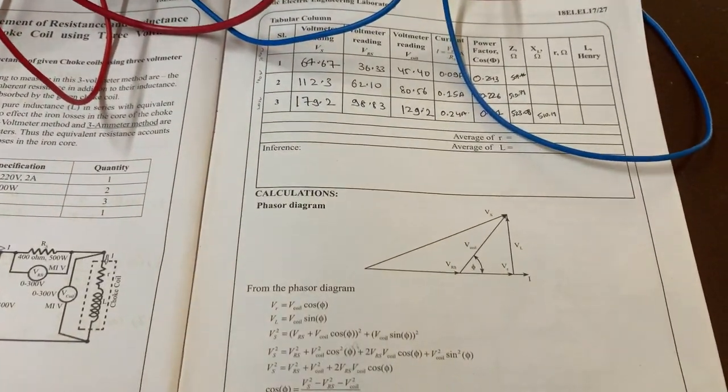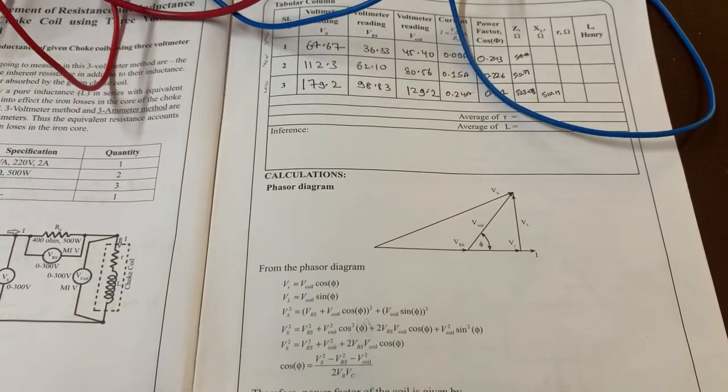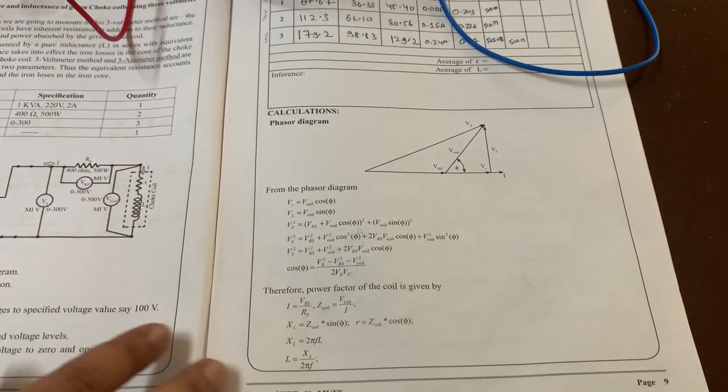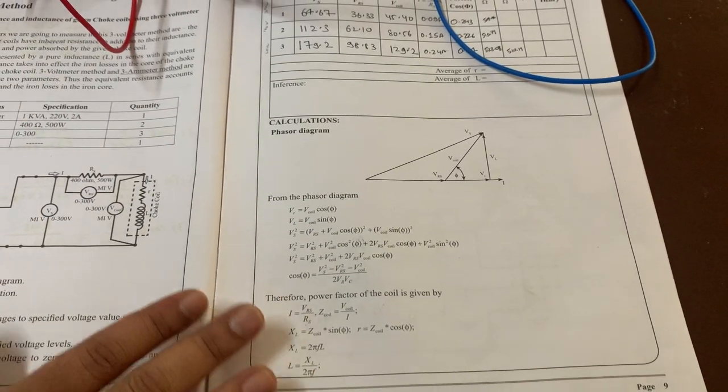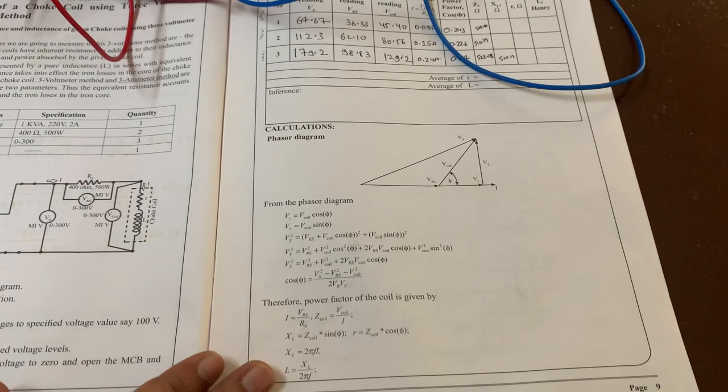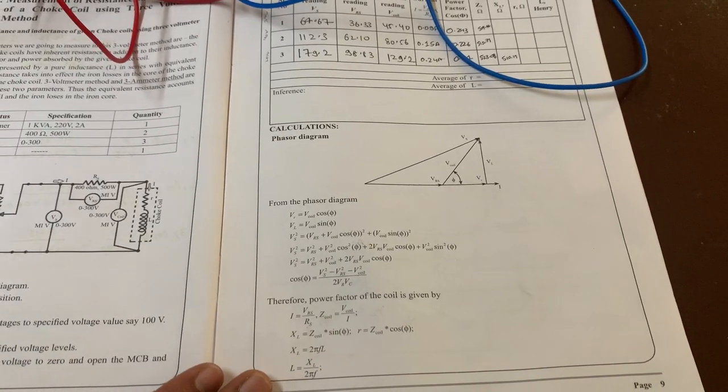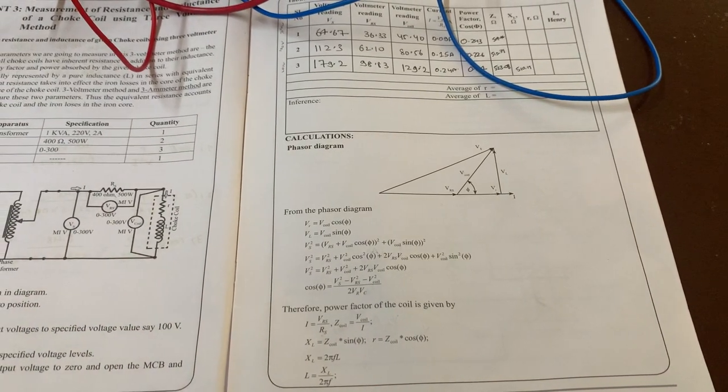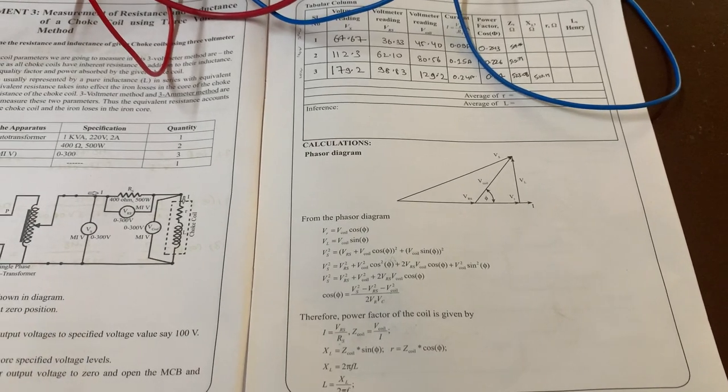As you can see, by using this phasor diagram we'll derive all the equations. We'll substitute the values into these formulas and then determine the values of R and L of the choke coil.